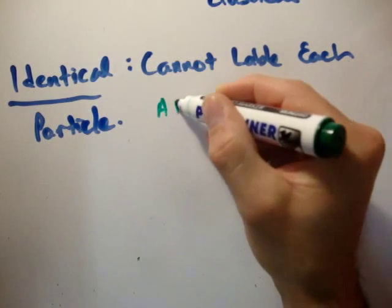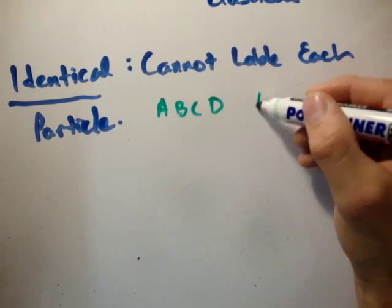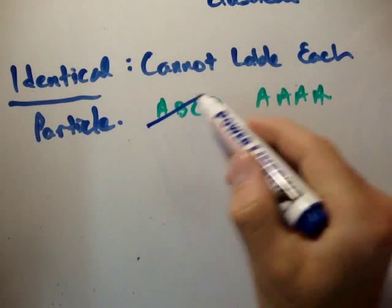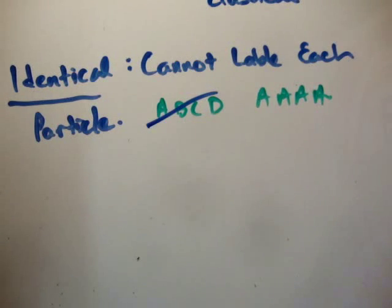Okay, so they're indistinguishable particles. So this time we went from A, B, C, D to A, A, A, A. We know that if we swap any of these, we couldn't possibly tell, because there's no way of telling they are identical particles.